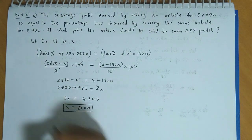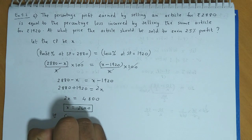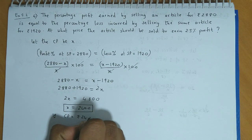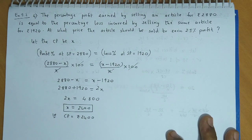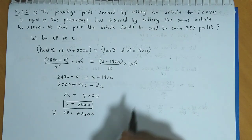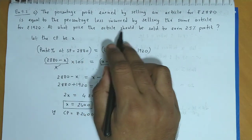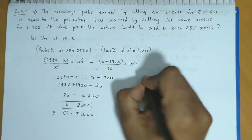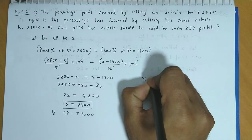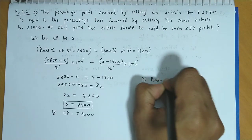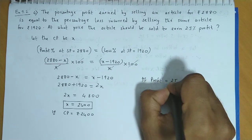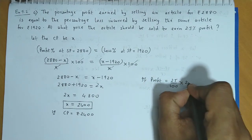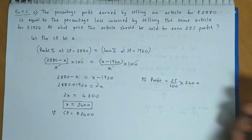यानि की cost price जो है वो है Rs. 2400. अब हमें पूछा गया है, at what price the article should be sold to earn 25% profit? तो अगर हमें profit चाहिए 25% का. So, 25% of the cost — cost is 2400.